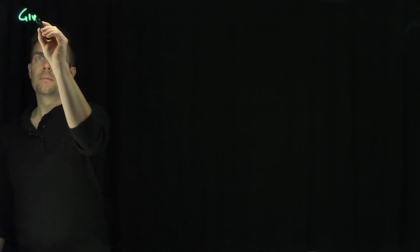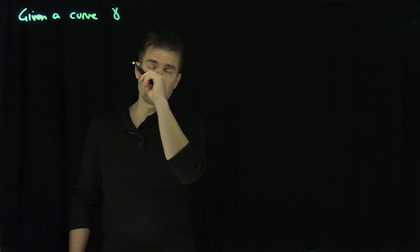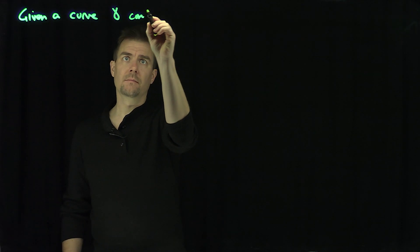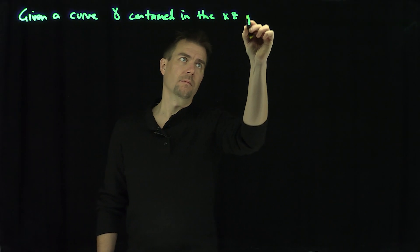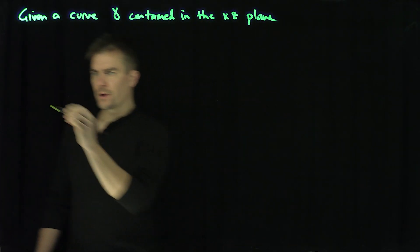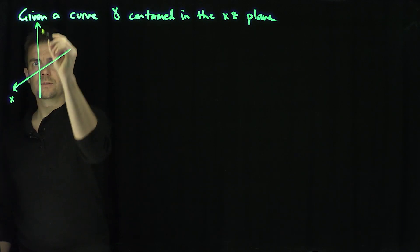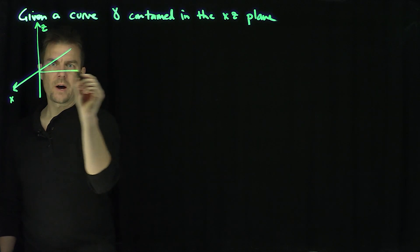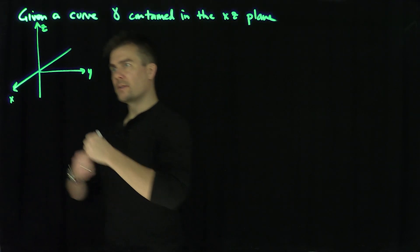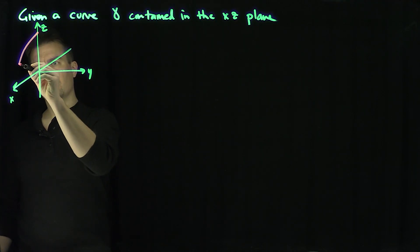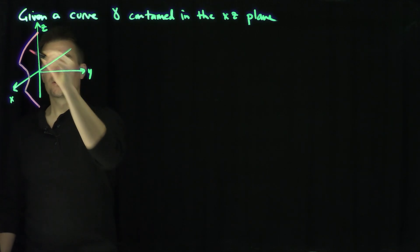Let's be given a curve gamma contained in the x-z plane. Here's our configuration: the x-axis, the z-axis, and the y-axis. I'm going to be given a profile in the x-z plane — some curve like this. There's my curve, gamma.